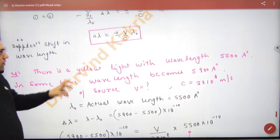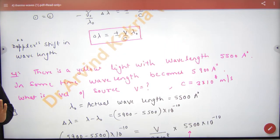So in Doppler's effect in light, we have done delta-lambda. Delta-lambda formula. Numerical is like this.